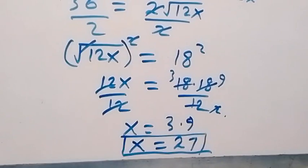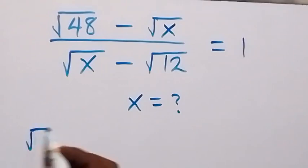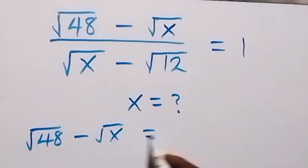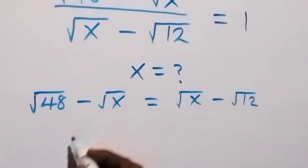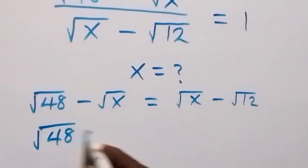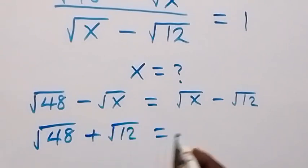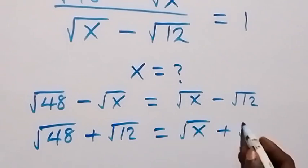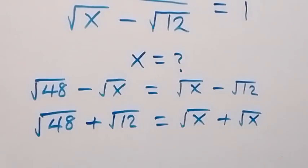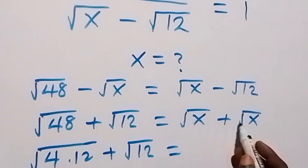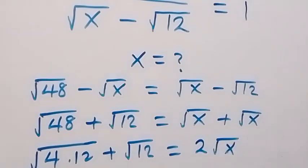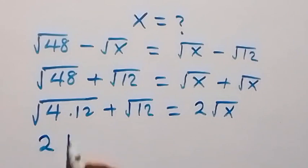Now we can also use another method. From the cross-multiplied equation, root 48 minus root x equals root x minus root 12, we separate root x to one side and bring the non-x terms to the other: root 48 plus root 12 equals root x plus root x, which is 2 root x. Root 48 can be written as root 4 times 12, and root 4 is 2, so we have 2 root 12 plus root 12.